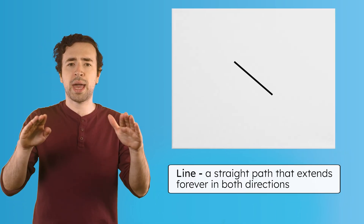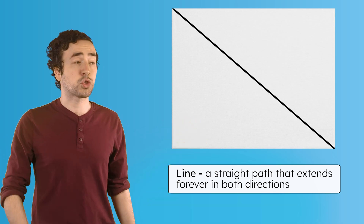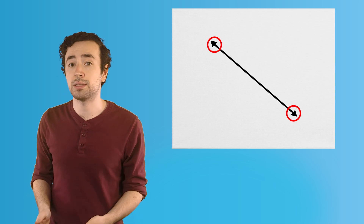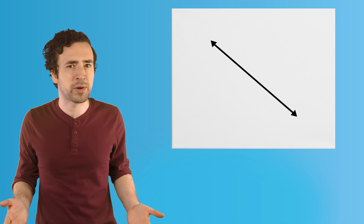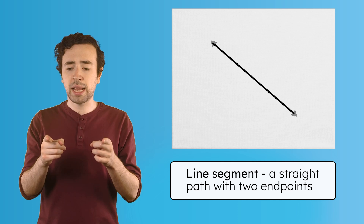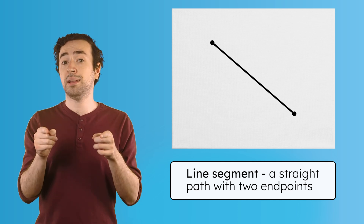A line is different. A line is a straight path that extends forever in both directions. That means if we tried to draw it completely, we'd never be able to stop. Since we can't do that, we just use little arrows to show that it never ends. But what if we don't want the line to go on forever? That's when we use a line segment. A line segment is just a piece of a line. It has two endpoints, which means it stops on both ends.